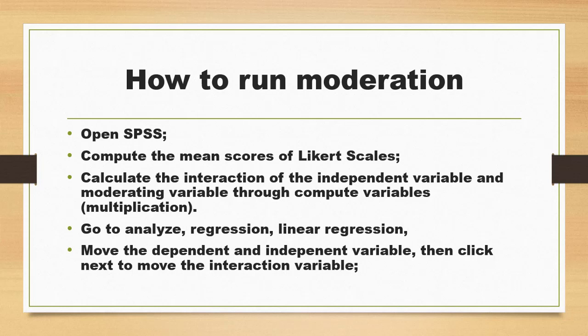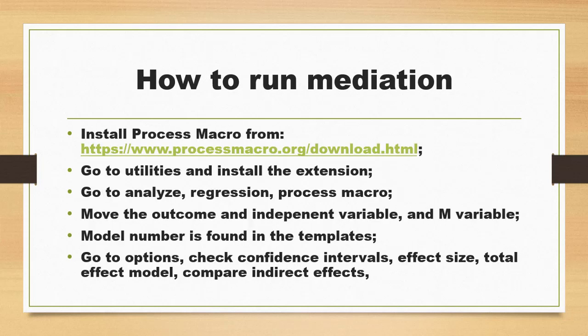Next, we calculate the interaction of the independent variable and the moderating variable through Compute Variable using multiplication. Then we go to Analyze > Regression > Linear Regression, move the dependent and independent variables to their corresponding lists, click Next to move the interaction variable, check some boxes, and click OK. You will then have the moderation analysis — no add-on required.